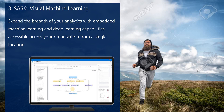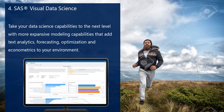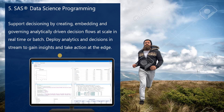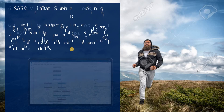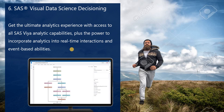Using SAS Visual Machine Learning you can implement a decision tree or binary tree very easily. SAS Visual Data Science takes data science capabilities to the next level — exploring model later text analytics, forecasting, optimization, and econometrics. SAS Data Science Programming also allows you to write code. If you're not comfortable with code, you can use the drag-and-drop functionality. SAS Data Science Decisioning provides the ultimate experience with access to SAS Visual Analytics plus the power to incorporate real-time interactions.